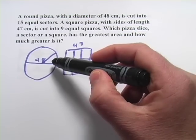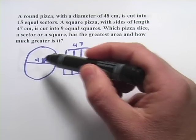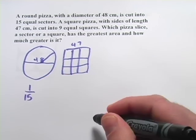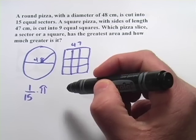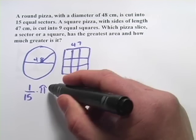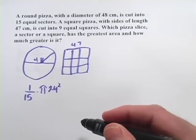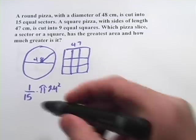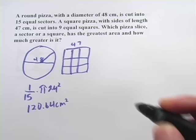So let's figure out the area of the sector first. We need to know what fraction of the circle it is. In this case they're telling us there are 15 pieces, so you know one piece is going to be 1/15th. And then we're going to multiply that by the area of this circle, which is pi times the radius squared. The diameter is 48, so the radius would be half that or 24. So that's 1/15th times pi times 24 squared. And when you crunch the numbers on that you're going to get 120.64 or so square centimeters.